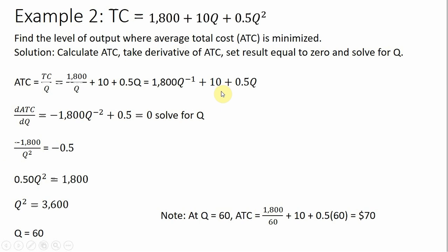The derivative of 10 is 0, and the derivative of 0.5q is just 0.5. Solving this equation for q — taking the square root of both sides — we see that q equals 60. At 60 units of output, average total cost per unit is minimized. If we wanted to, we could evaluate average total cost at 60 units of output, so I plug 60 into the average total cost equation and solve, and we get $70.